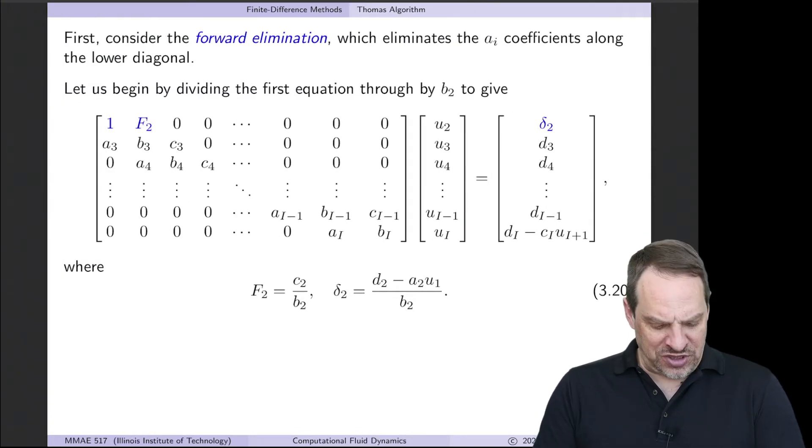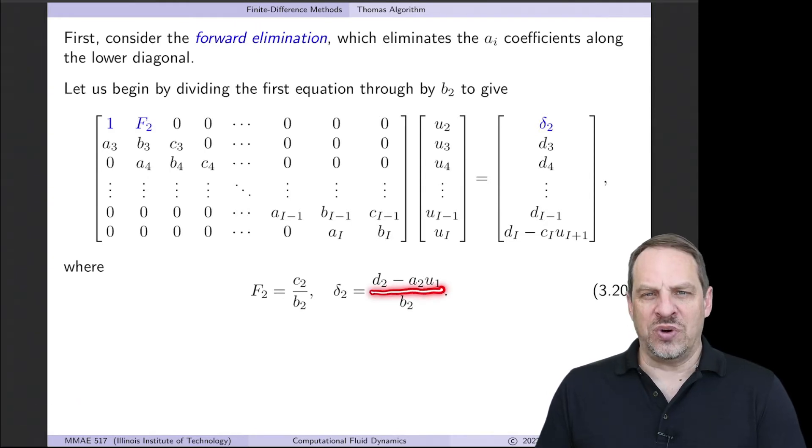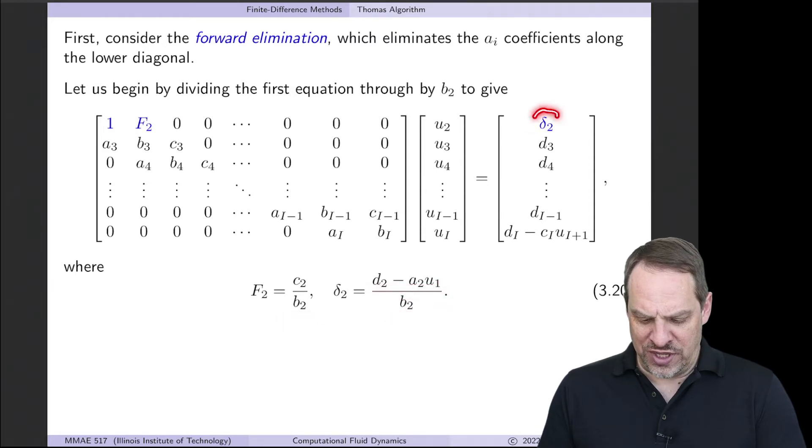So in the forward elimination, we want to have a leading 1 in each row. We had a B2 here. So to make that a 1, simply divide through the first row by B2. So we have 1 and then the second element will be C2 divided by the B2. And then on the right-hand side, we'll have the D2 minus A2U1 that we had before, divided by the B2 again. And we'll call that delta 2.